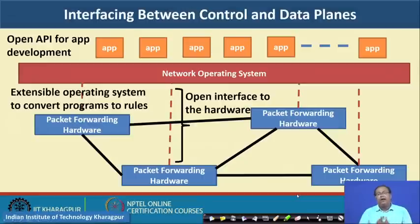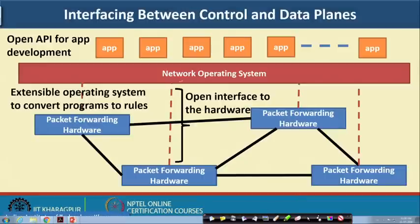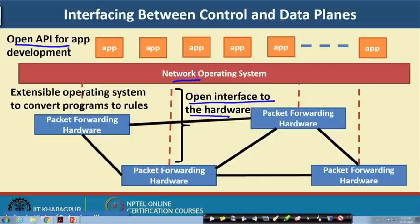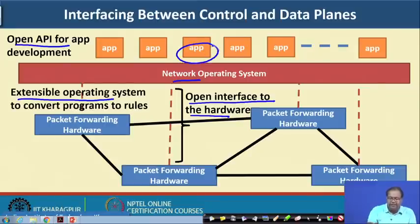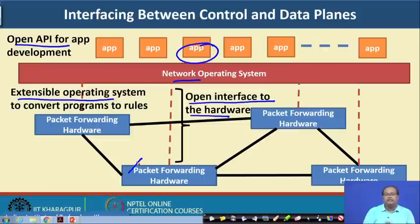In summary, to talk between the network operating system and the corresponding infrastructure, we require an open interface to the hardware so that you do not depend on corresponding vendors to program your network. The second thing is that we require an open API for application development, so that any application developer can develop a network application. The third thing is that we require an extensible operating system to convert programs to rules — from that program we need to map it to the corresponding rule which will be executed at the TCAM hardware of the packet forwarding engine inside the switches.